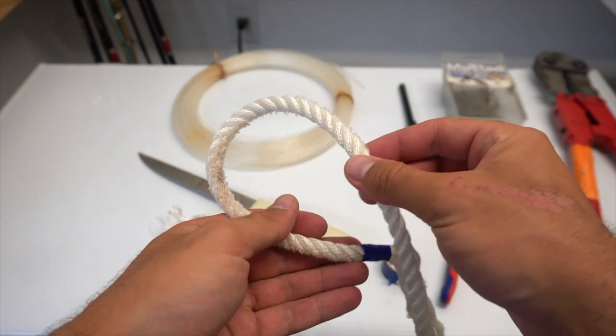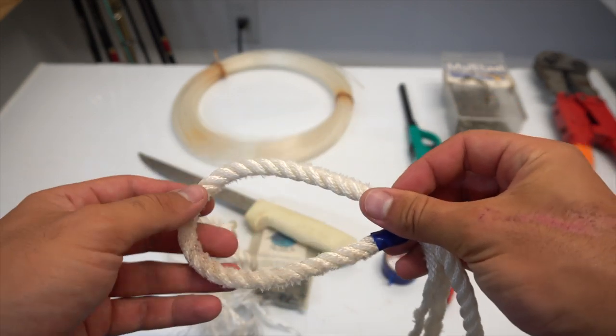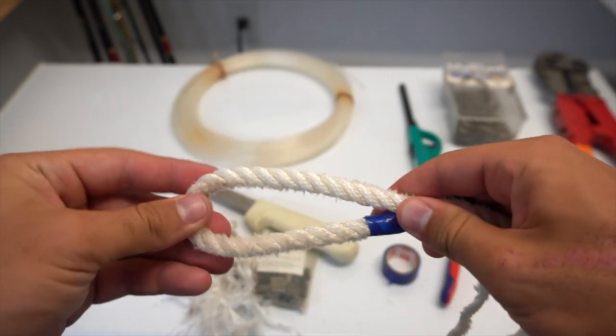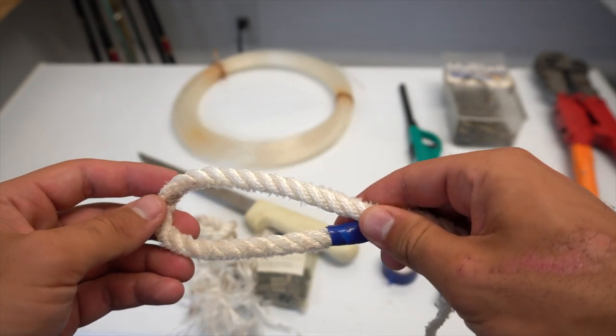You then want to make a loop using the section of rope that's behind your tape mark. This loop is going to be where you're going to tie your mono and where it connects back to the rope is where you're going to start your splicing.